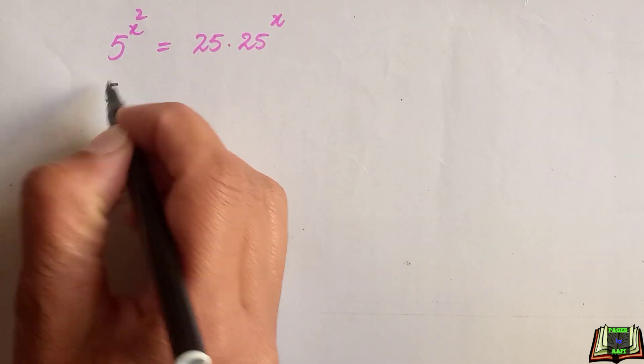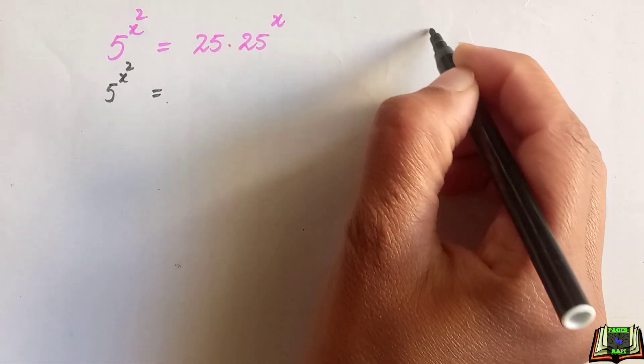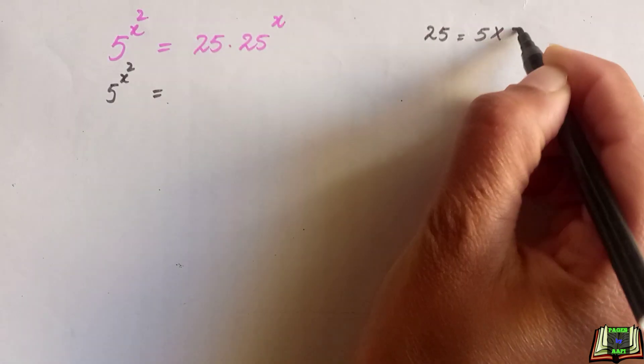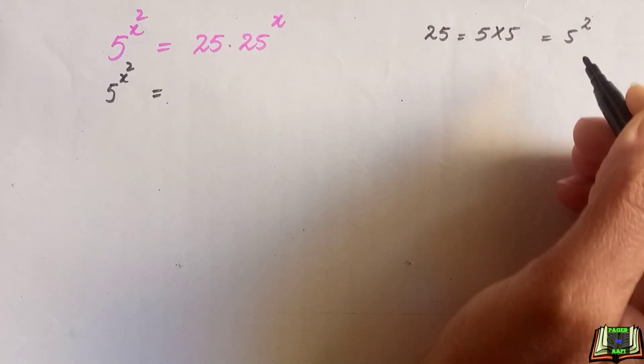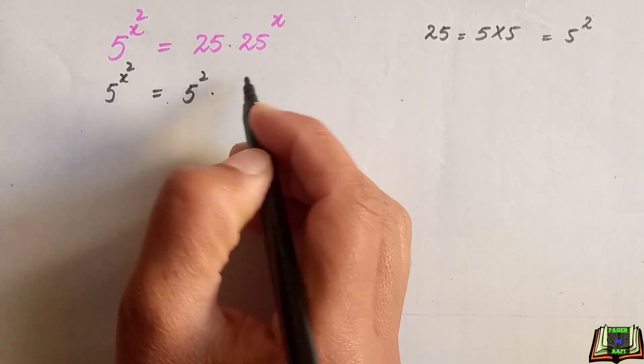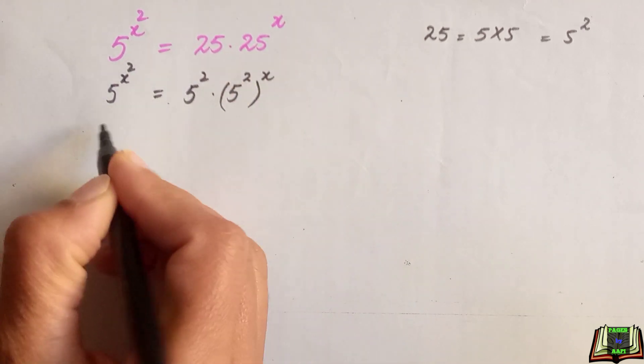5 raised to power x raised to power 2, and this 25 is the same as 5 times 5, and 5 times 5 is 5 square. So 25 can be written as 5 square times this 25 as 5 square and here whole power x.